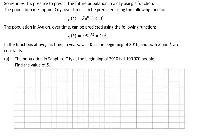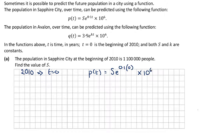Part A asks: the population in Sapphire City at the beginning of 2010 is 1.1 million, that's 1,100,000. Find the value of S, knowing that S is a constant. Since 2010 gives us T = 0, we substitute into P(T) = S · e^(0.1T) / 10^6, giving S · e^0 / 10^6. Anything to the power of 0, including e, equals 1, so we get S / 10^6.